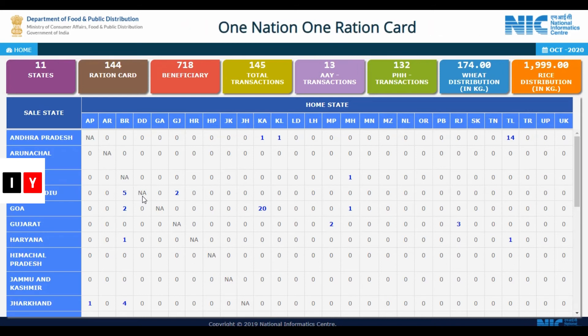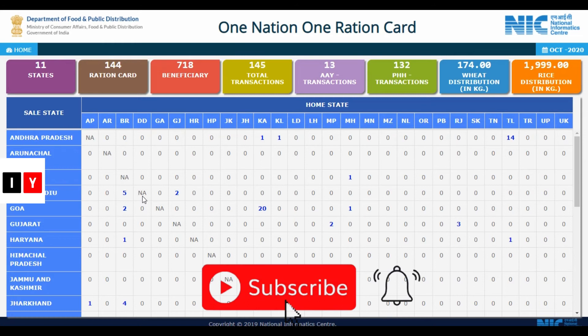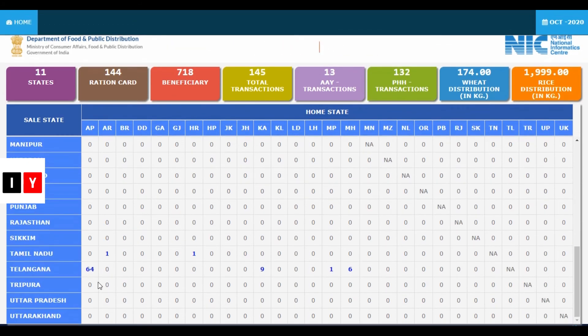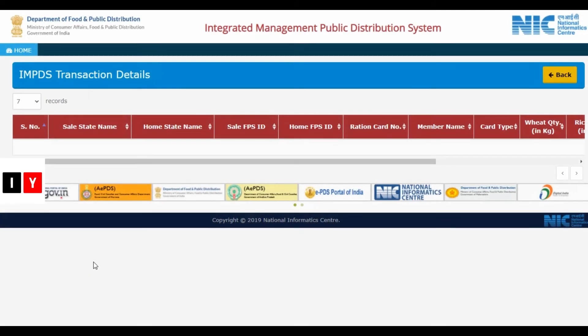There are a total of 24 states and four union territories that have started implementing this ration card scheme. You can click on the state name or number on the dashboard to open the required details, where you can see the sale state name and related information.